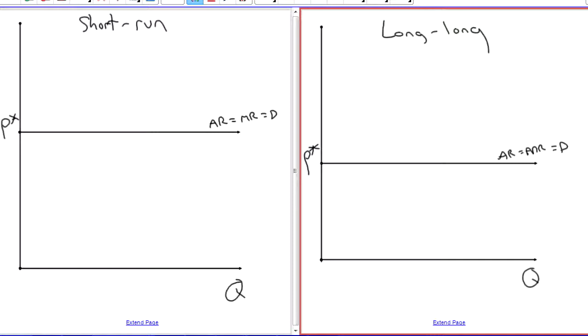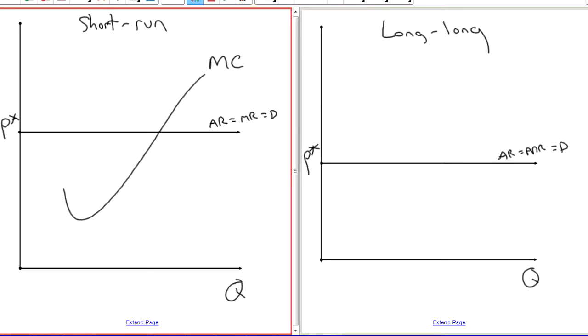So first, I'll be drawing in the MC curve and the AC curve. At this quantity, the firm is profit maximizing and they will have an average cost of this here.